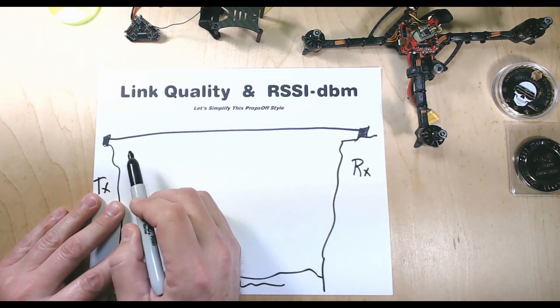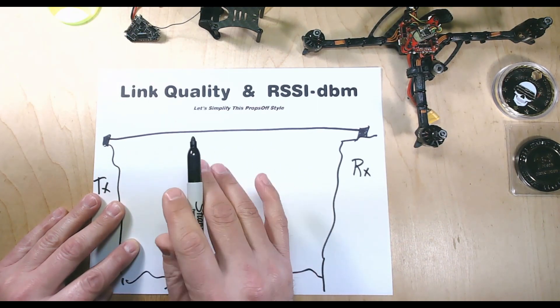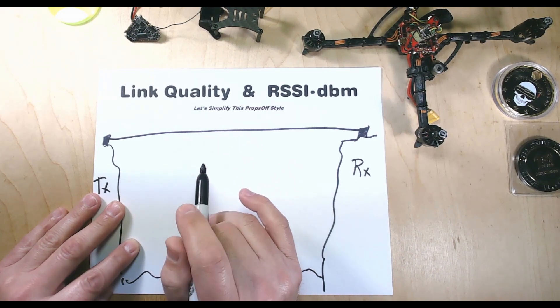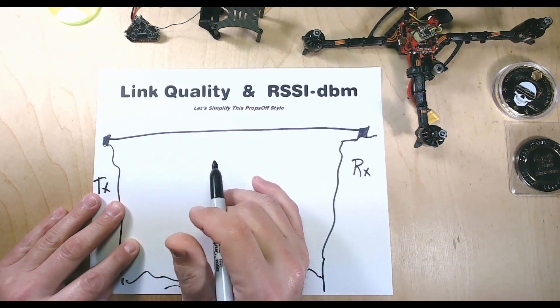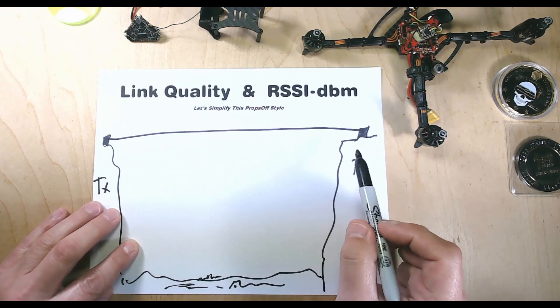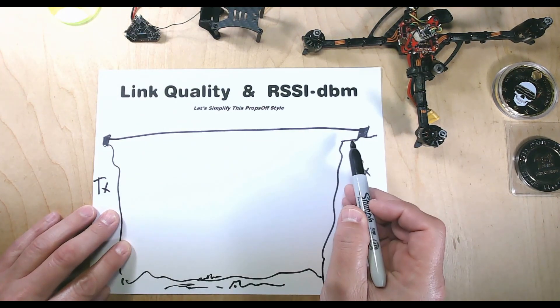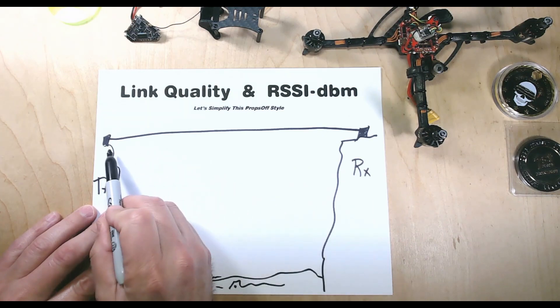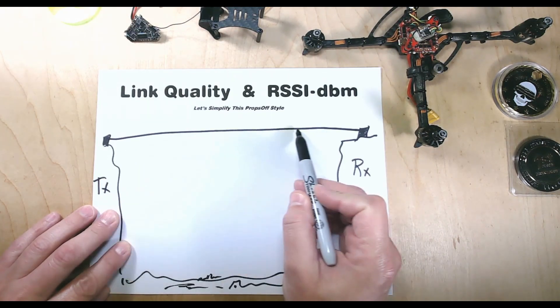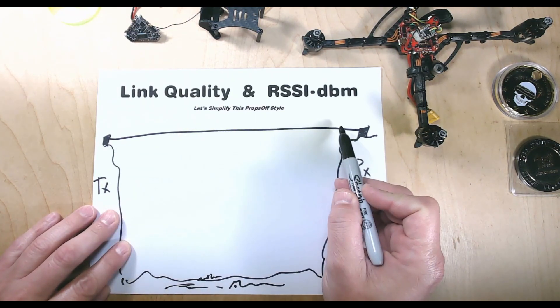In this example, think of packets as little green army men. We want to make sure that we get all of our green army men over here and back over here safely. RSSI-dbm is the strength, so let's say this is a heavy-duty cable.